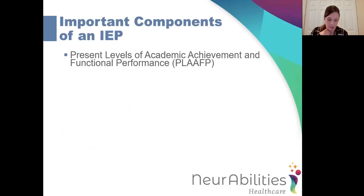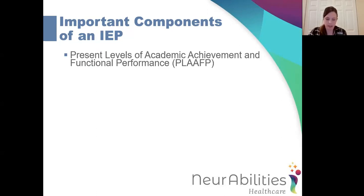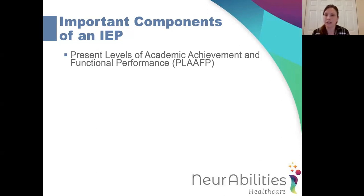There's a lot of information in an IEP, but we're going to go over some important components. The first is the present levels of academic achievement and functional performance, also called the PLAAFP statement. This is the narrative that discusses your child's strengths and weaknesses and their current performance and functioning. For your initial IEP, this should include the skills and abilities covered during the initial assessments and evaluations, as well as all the developmental areas in which your child requires support.